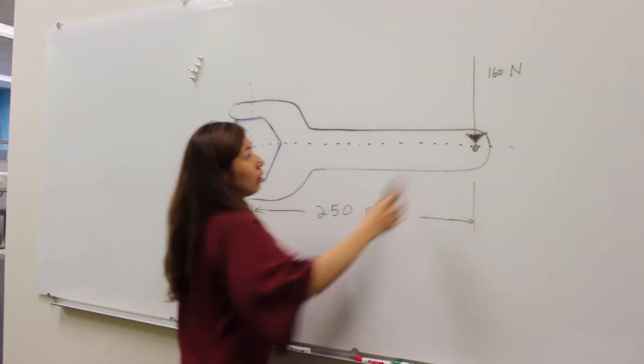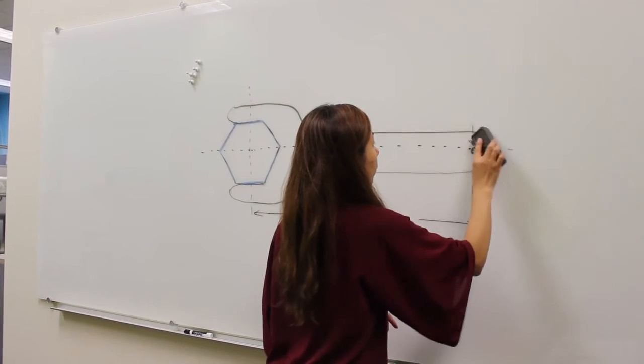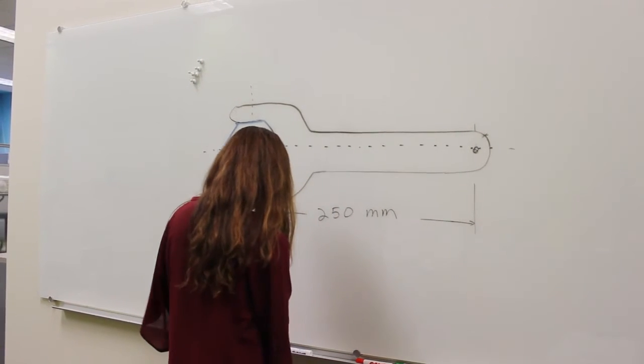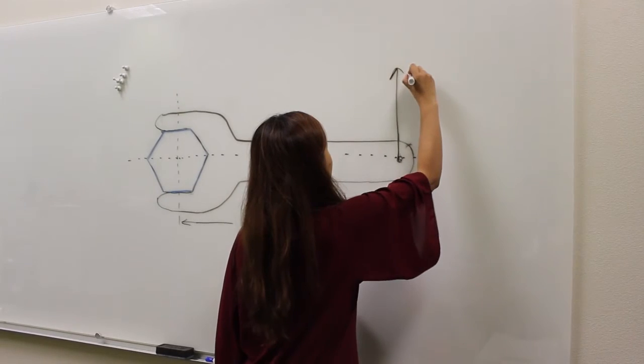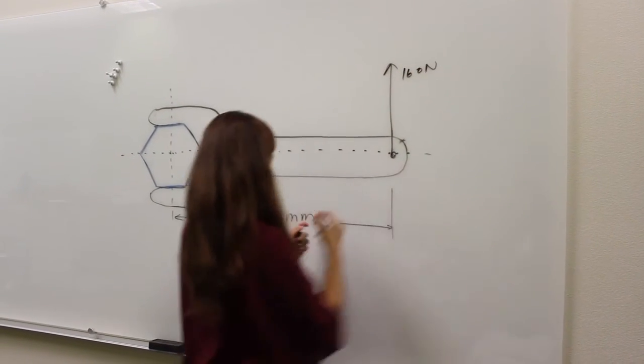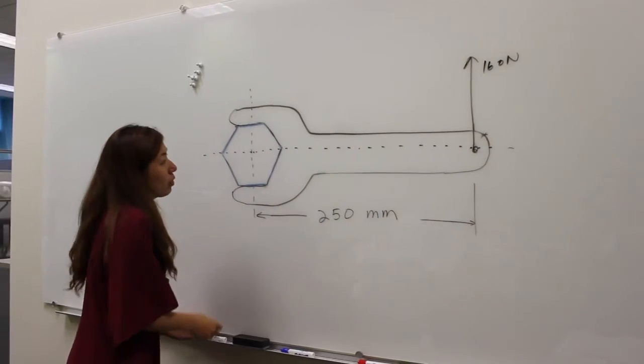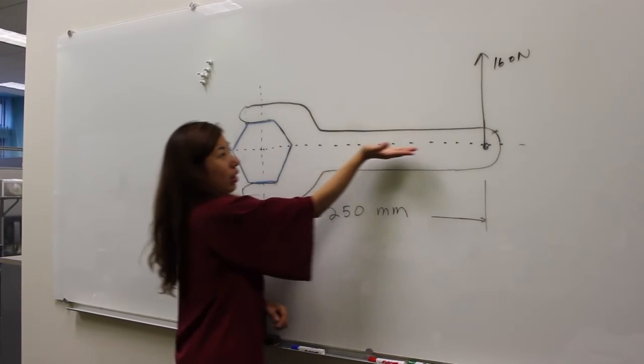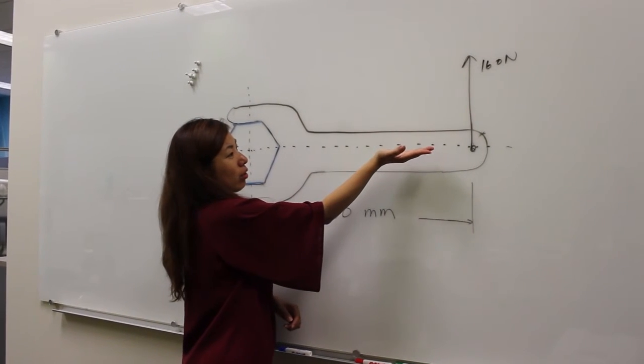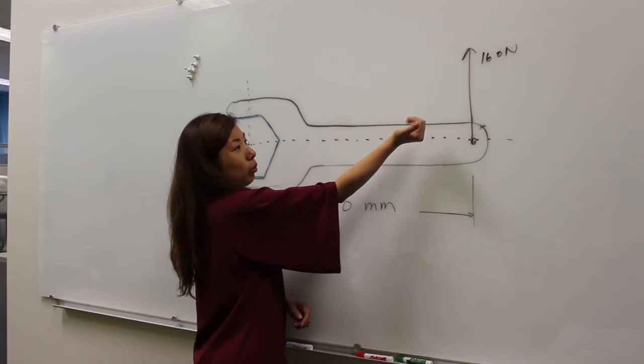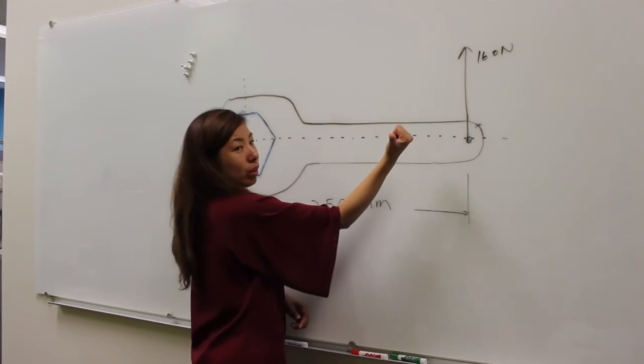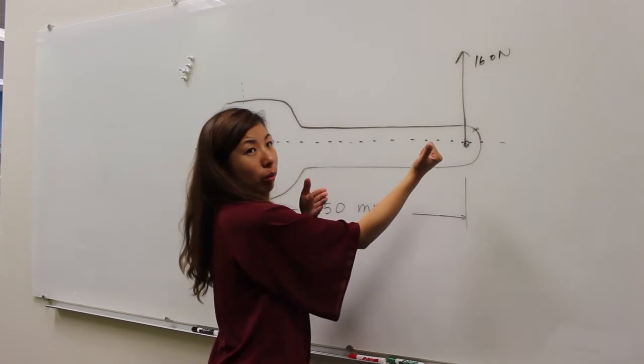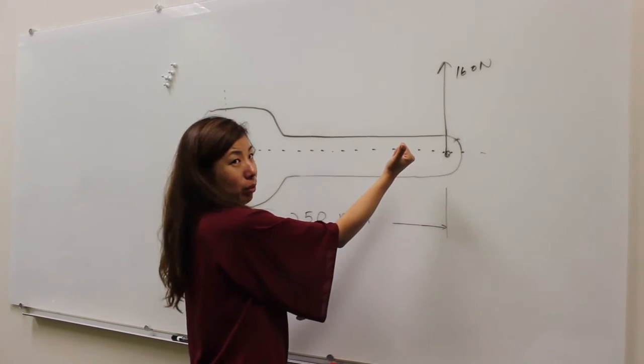On the other hand, if we flip the direction of the force to go upward, we do the same thing. In this case, you can easily see that your four fingers can curl toward the direction of the force, and your thumb is pointing toward you or away from the wall, which means the moment is positive.